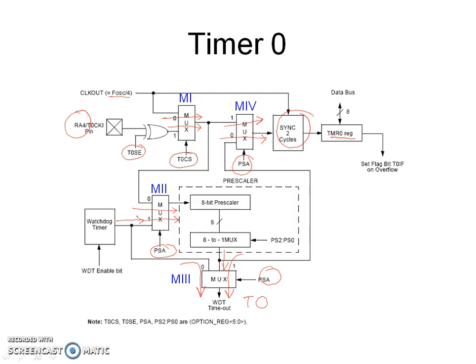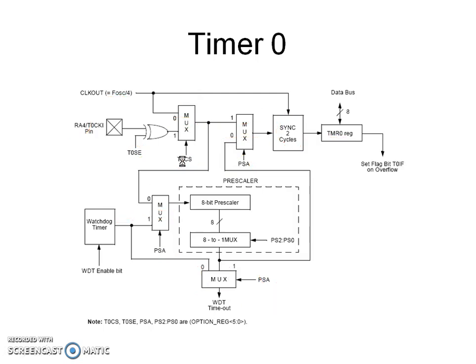Note that when T0CS is 0, Timer 0 will count the internal clock Fosc divided by 4, so Timer 0 will work as a timer. When T0CS is 1, Timer 0 will count the signal at the RA4 pin, therefore Timer 0 will work as a counter.